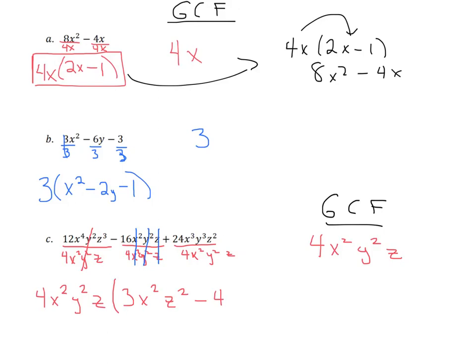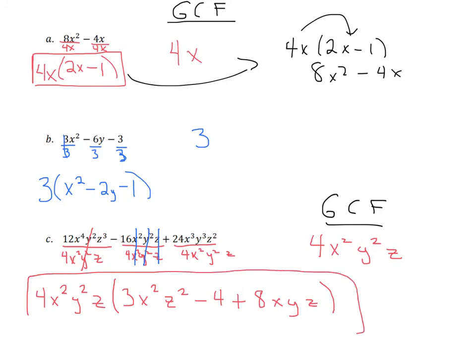Our last term: positive 24 divided by 4 is positive 8. x to the 3rd divided by x squared — subtract exponents, 3 minus 2 — gives us x to the 1st. y to the 3rd divided by y squared gives us y to the 1st. z squared divided by z to the 1st gives us z to the 1st. Close our parentheses because we've factored everything out, and that's going to be our answer.